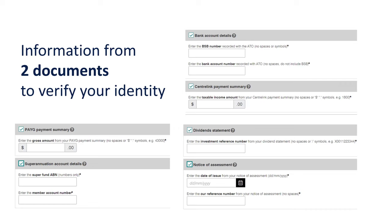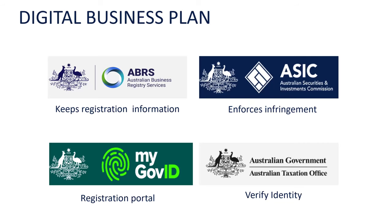Once you fill in all the other details, you'll be given a Director ID number. So here's how it all works: the ABRS administers the whole data collection and verification process; the MyGov ID is the digital online verification app on your phone; and you need to link your MyGov ID to the tax office to get the information required to get the Director ID. ASIC is there to use this information and enforce the rules to make sure everyone's doing it when they need to.